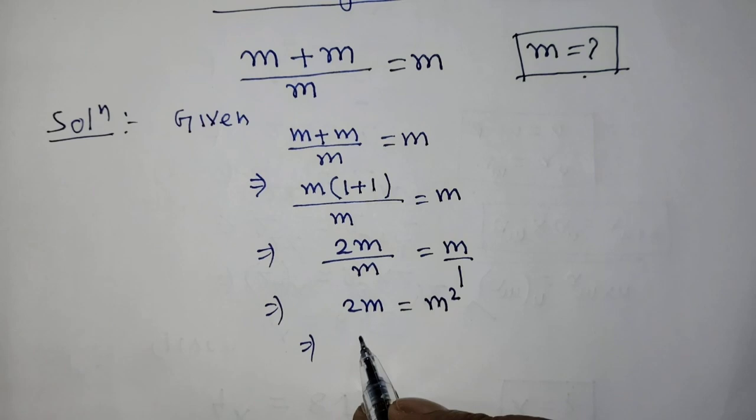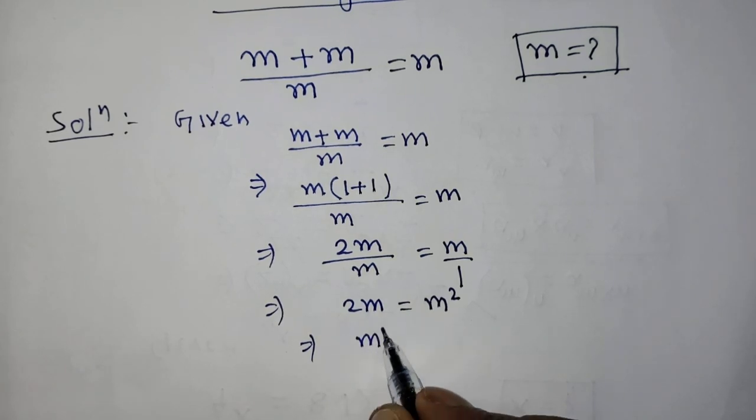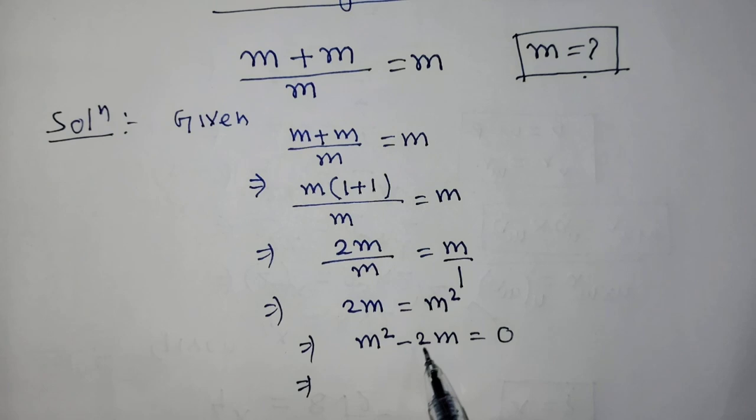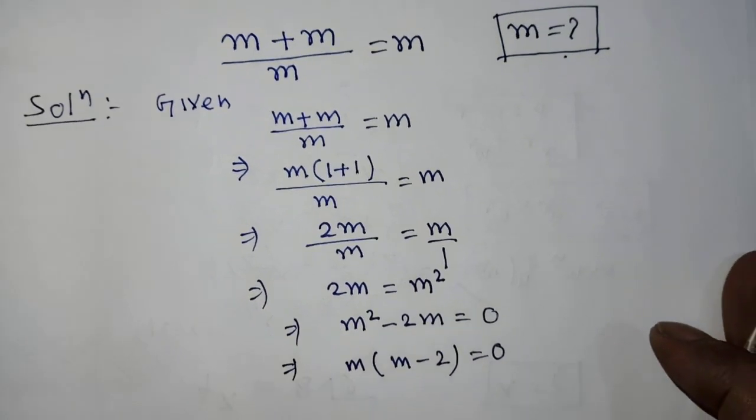We can write from this equation m squared minus 2m equals 0. On the left-hand side, the common factor of both terms is m, so it will be m times m minus 2 equals 0.